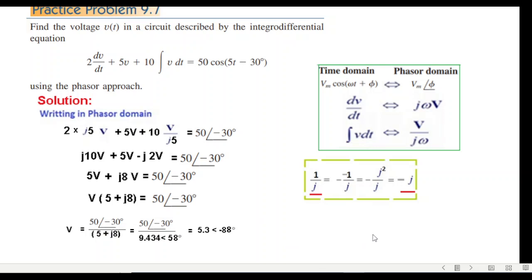So now we can easily convert it into time domain. The magnitude is this, cos ωt, that is cos 5t. And now our angle is minus 88°. So minus 88°. So this is the answer in time domain.